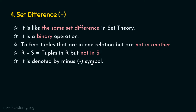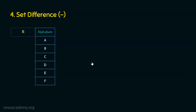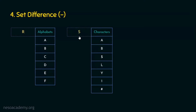Before stepping into the formal example, let's understand the working of the set difference operation. Let's say there is a relation R which contains the set of alphabets A, B, C, D, E and F. And let's say we have another relation S which contains characters A, B, $, L, Y, 1, hash. And the operation we are going to perform is R minus S — the set of all elements in R but not in S.